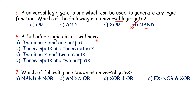The next question: a full adder logic circuit will have two bits and also accounts for the carry input generated in the previous stage. It has three inputs and two outputs — sum and carry. In the case of a half adder circuit, there are only two inputs and two outputs — sum and carry. So three inputs and two outputs is the correct answer for the full adder. Option D is the correct answer.